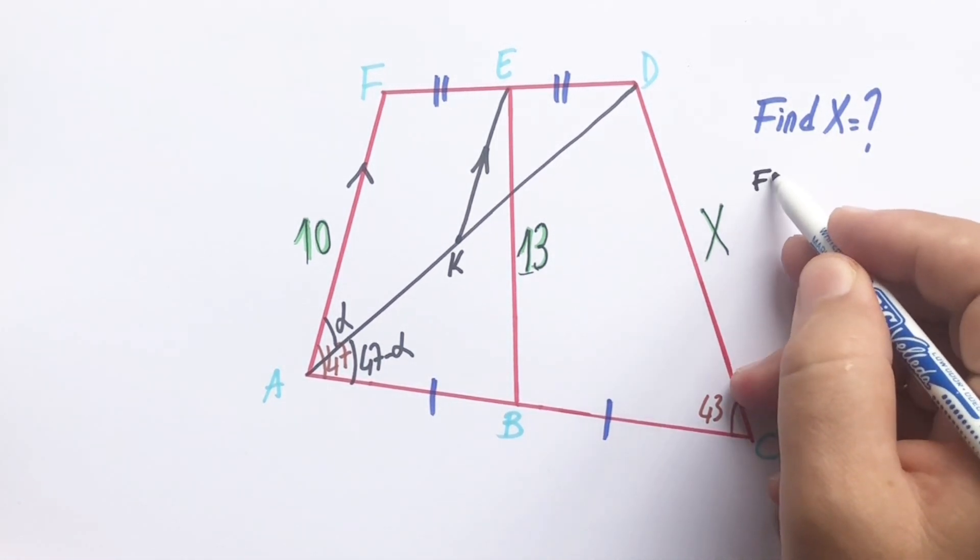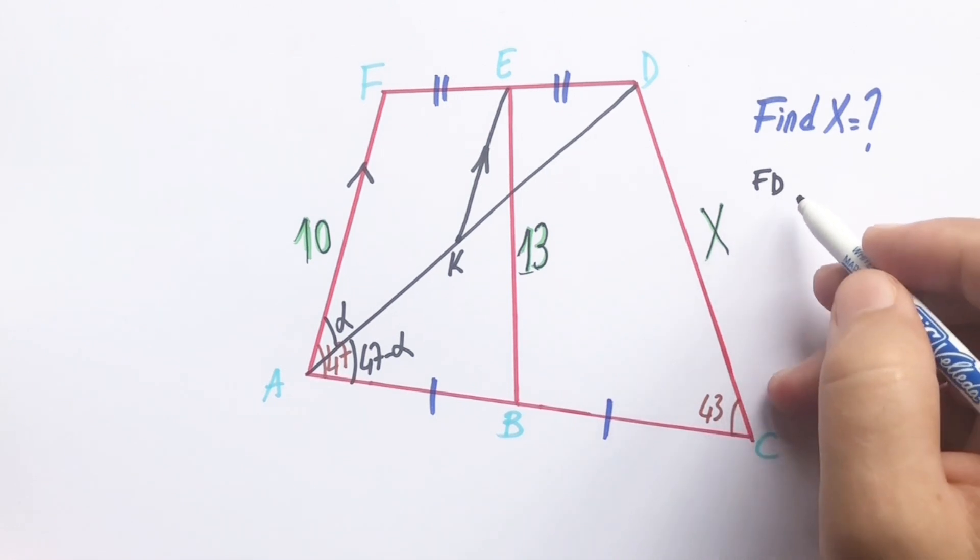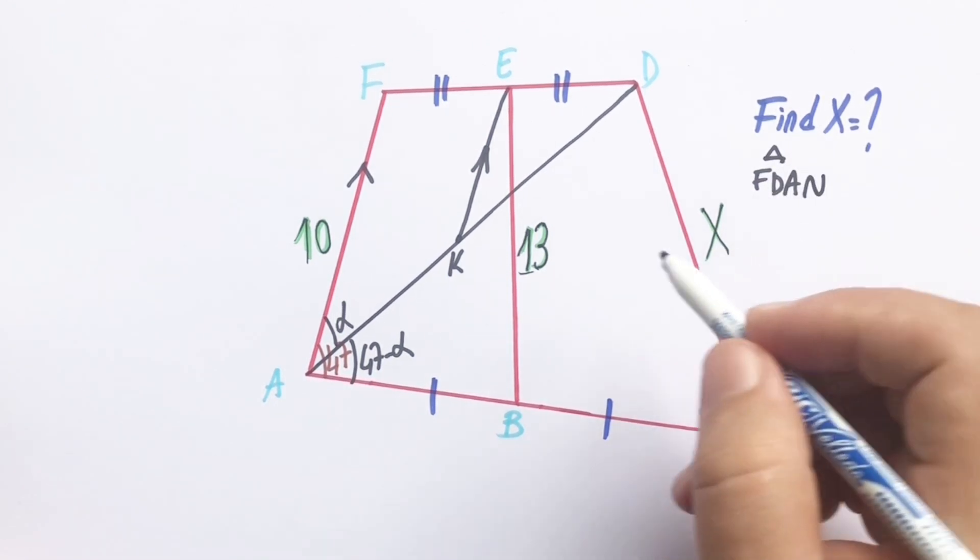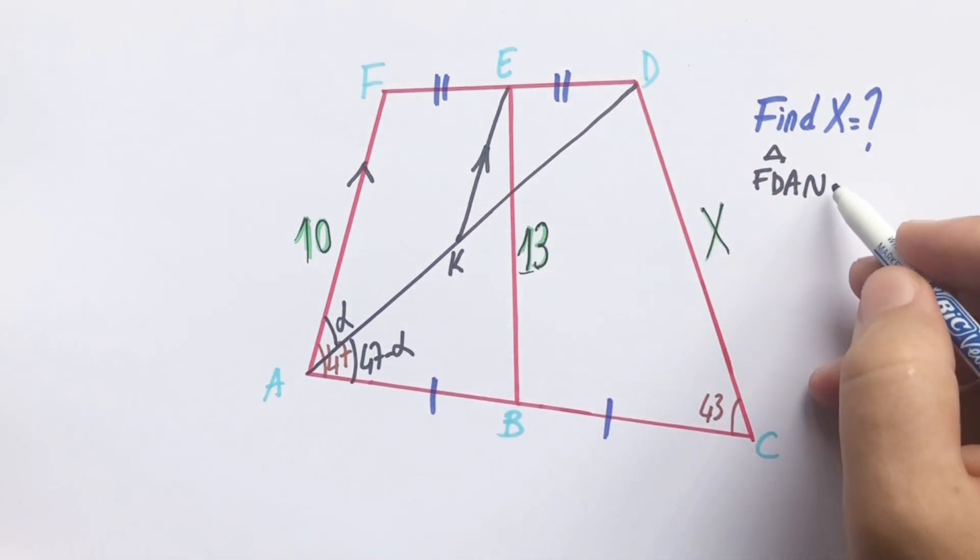FDA triangle and EDK triangle are similar because they have the same angles.